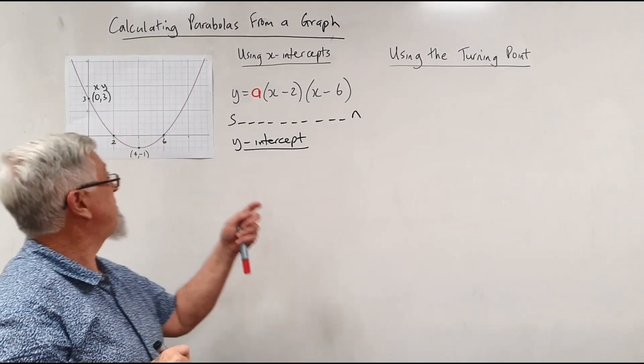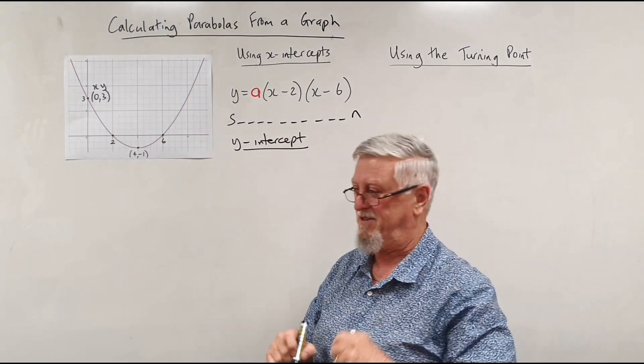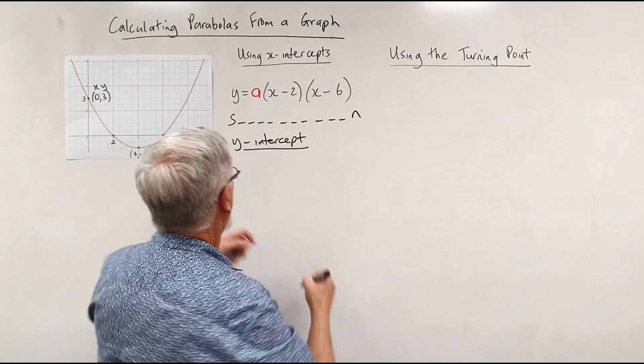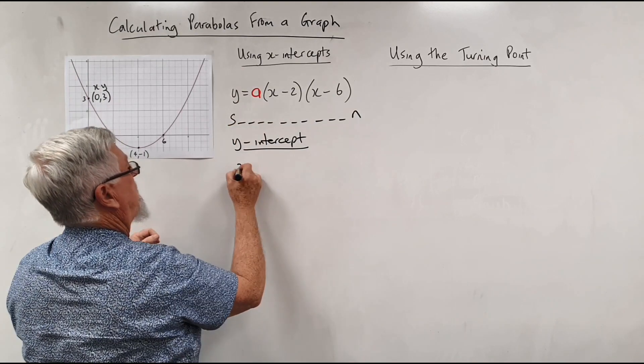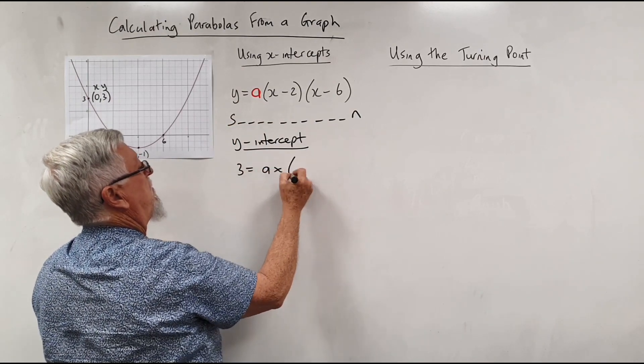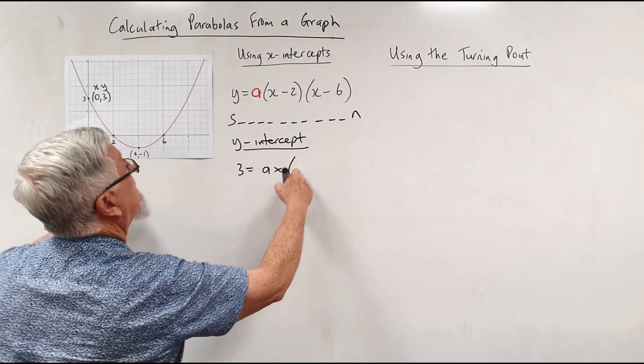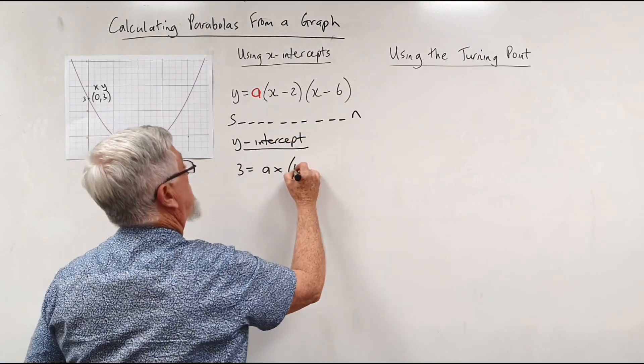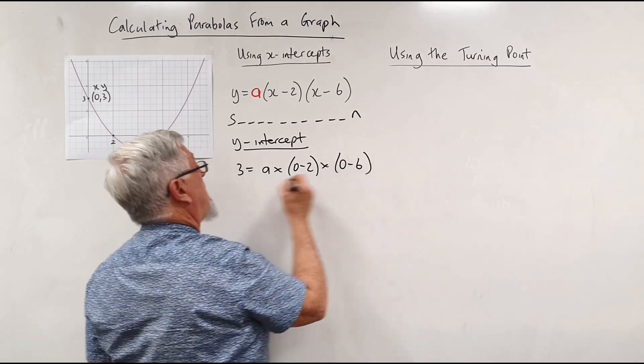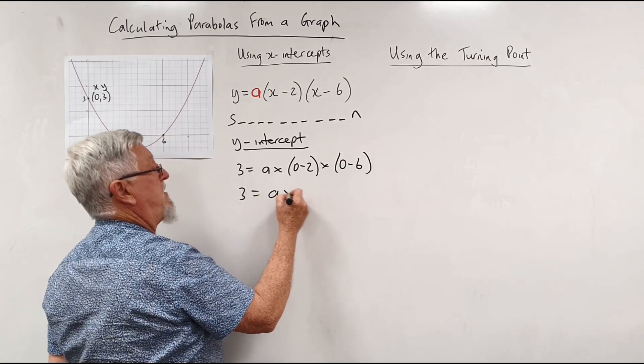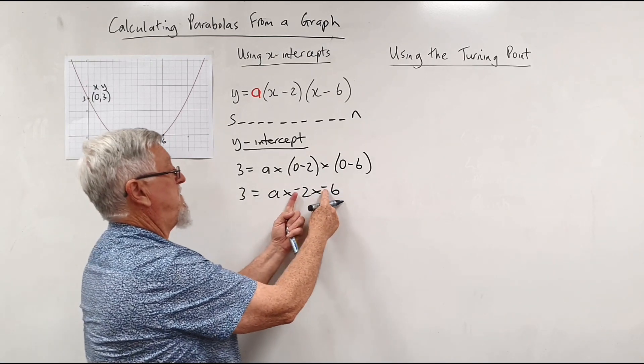So that 3 there actually is, don't forget that it's actually (0, 3). So we're talking about an x-value of 0 and a y-value of 3. I do say to a lot of students, if you write that on top, it does stop a lot of mistakes. So if I go back to here, I know that the y is 3, so I've got 3 equals a times, I'm going to write the whole thing carefully. The x-value of 0, so I've got 0 take 2, multiplied by 0 take 6.